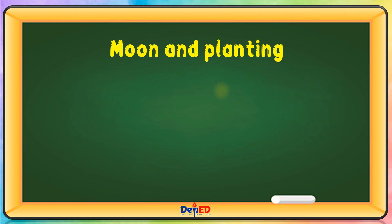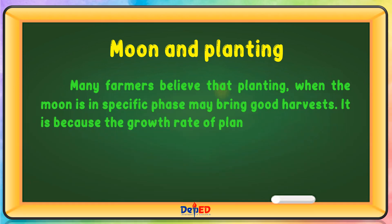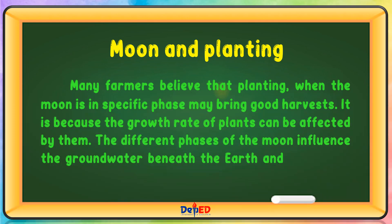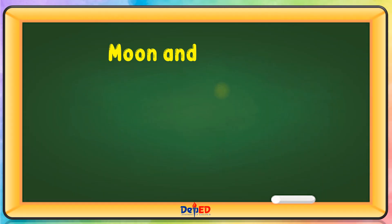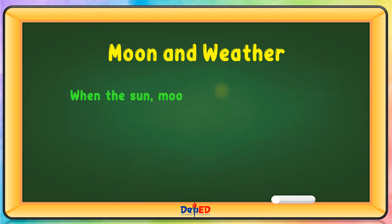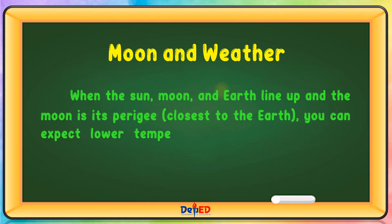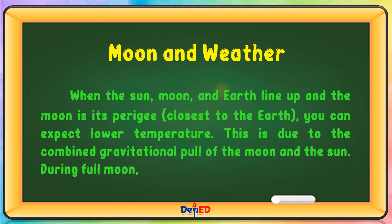Moon and Planting — The movement of fluids within plants is influenced by the Moon. Moon and Weather — When the Sun, Moon, and Earth line up and the Moon is at its perigee, closest to the Earth, you can expect lower temperature. This is due to the combined gravitational pull of the Moon and the Sun. During full moon, it causes a bulge in the ocean.